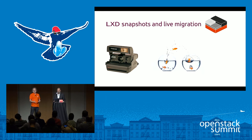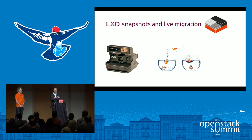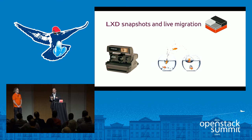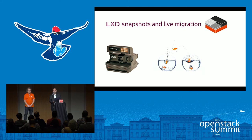LXD has hypervisor-type features: you can snapshot containers, do work, and roll back. You can migrate containers between hosts and do that online — live migration from host A to host B entirely using the LXD API, to do maintenance or distribute load. LXD is a hypervisor at the end of the day. Where you use KVM today, you can optionally use LXD right next to it on the same machine and create bare metal container guests with the same snapshotting and live migration primitives you'd expect from KVM.